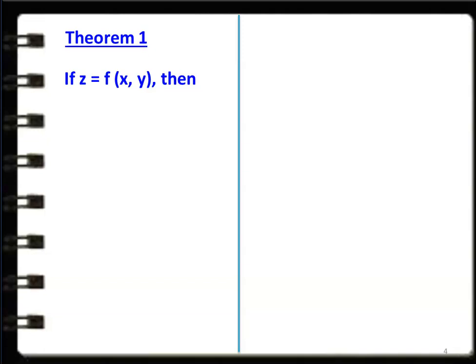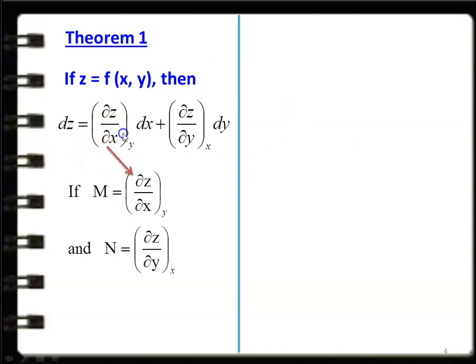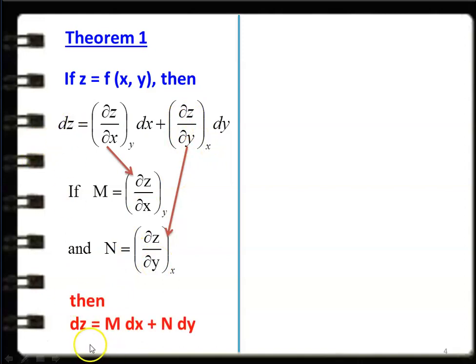If z is a dependent variable which is a function of x and y, where x and y are independent variables, then differentiating this equation: dz = (∂z/∂x) at constant y · dx + (∂z/∂y) at constant x · dy. This is the partial differentiation of the function. We denote (∂z/∂x) at constant y as M, and (∂z/∂y) at constant x as N. Then this equation can be written as dz = M dx + N dy.